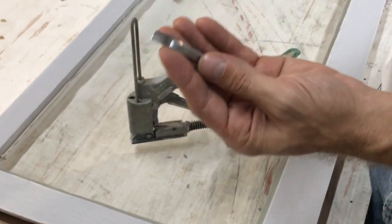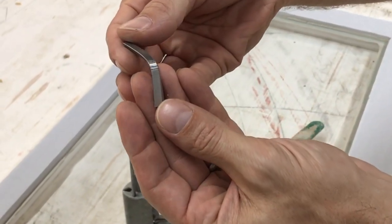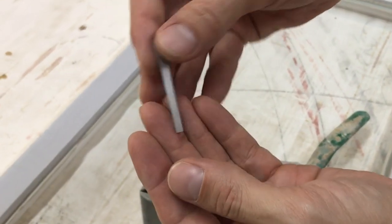These are the glazing points. They come in, I don't know how many are in here, probably like 500 or so, in just little collated strips.